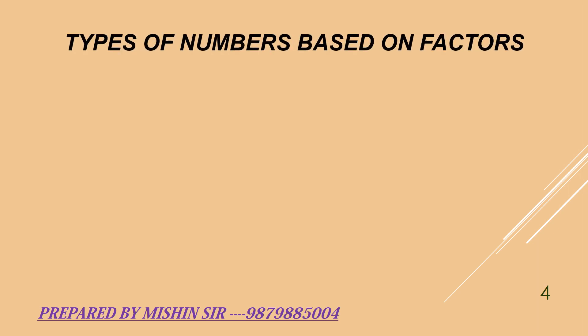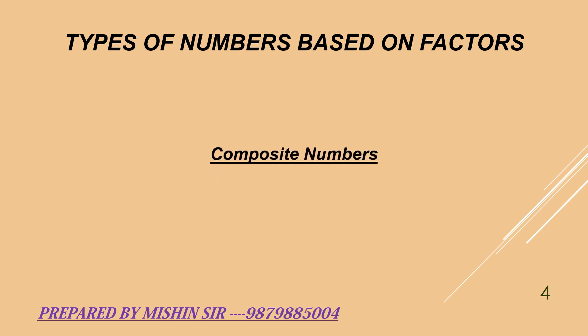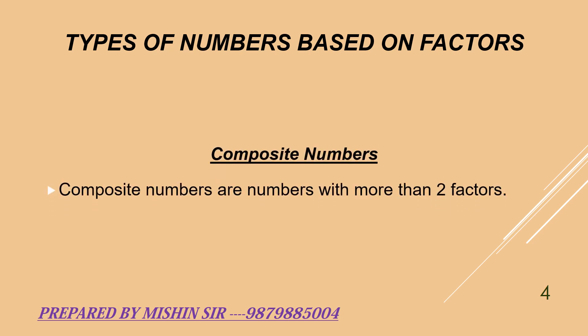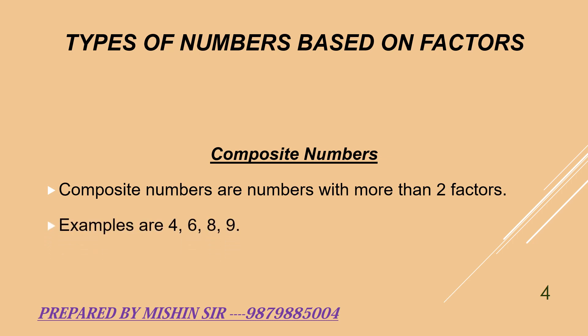Another type of numbers based on factors is composite numbers. Composite numbers are numbers with more than two factors. For example, 4, 6, 8, 9, and so on.